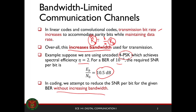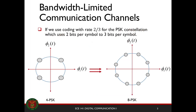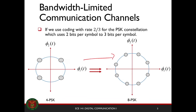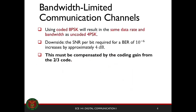We maintain the same transmission rate, but our data rate is reduced. And if we use coding — say you have a 2/3 rate for a PSK constellation — your QPSK becomes an 8PSK, as you see here. You maintain the data rate using that setup for a coded PSK, but the downside is that to get an SNR per bit for a BER of 10 to the minus 6, you need approximately a 4 dB increase in power. This 4 dB must be compensated by the coding gain from the 2/3 code.